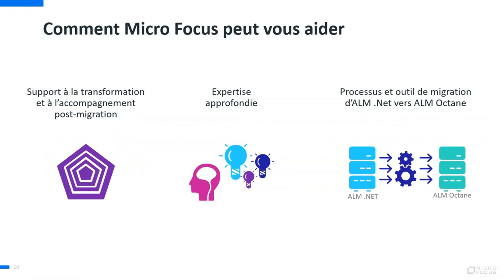Comment Octane va s'intégrer dans ma chaîne logicielle — par exemple Jenkins, Git — et comment le produit va s'intégrer dans mon écosystème. Comment définir les éléments que j'ai dans ALM.NET, ceux que je dois migrer, et une fois migré, comment je les retravaille dans Octane pour qu'ils soient utilisables rapidement par mes équipes en cours de test.